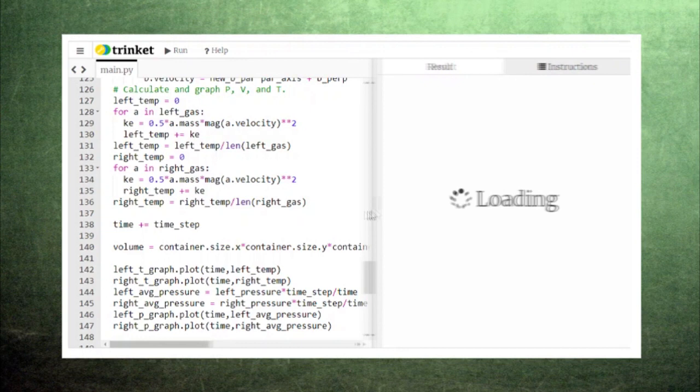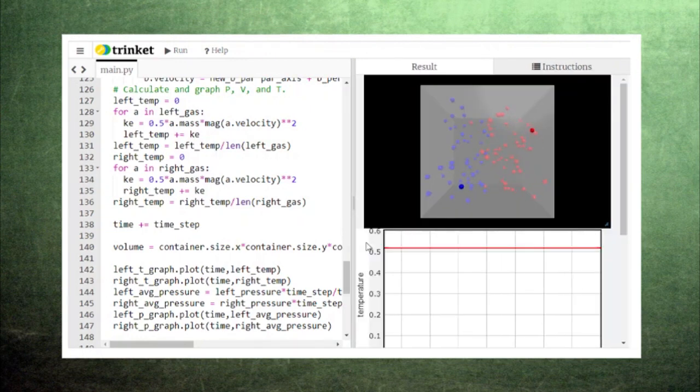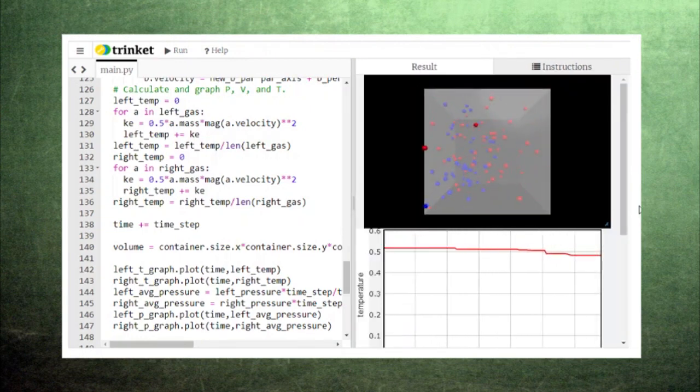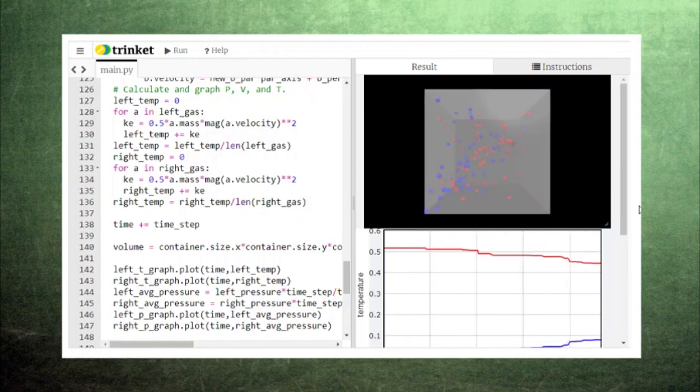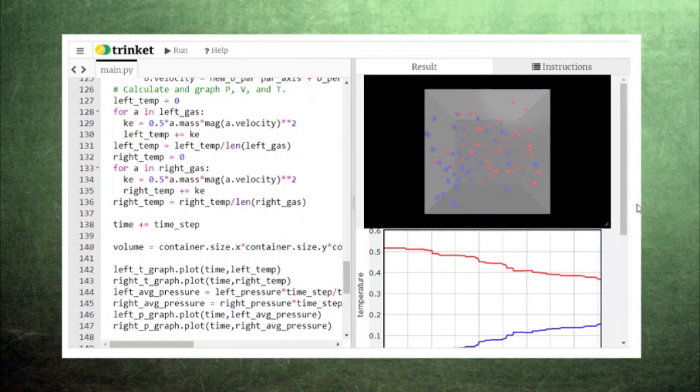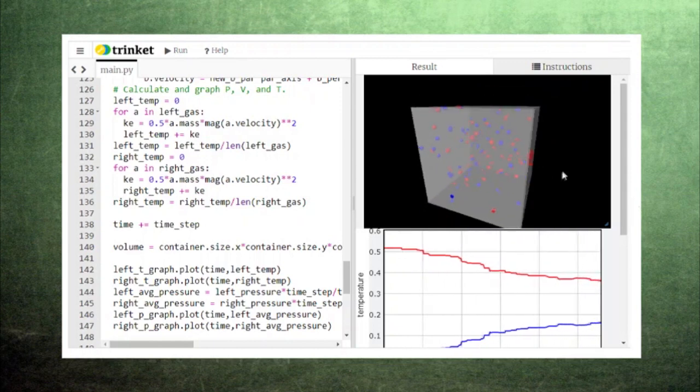When we run the code, we can see that the particles of the red gas, as expected, move around much more quickly than the particles of the blue gas. However, it does not take long for the red particles to collide with the blue particles and transfer kinetic energy to the blue particles.